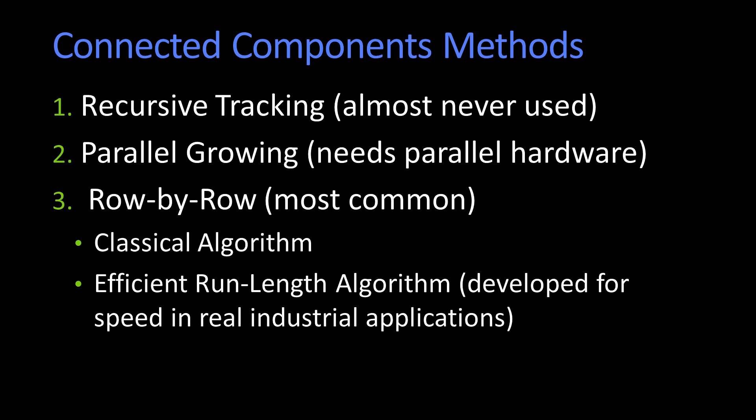There are a variety of connected component methods. The one that most people use is referred to as row by row. It's a classic algorithm and simple to go through. And there are some efficient speed ups that were used so you could run it quickly in industrial systems.